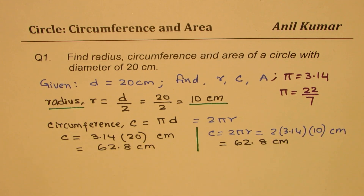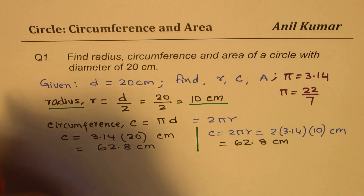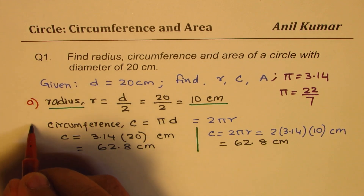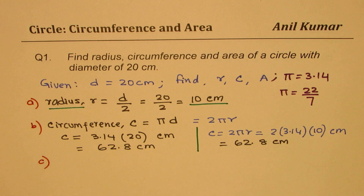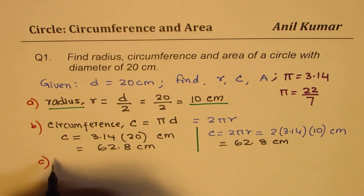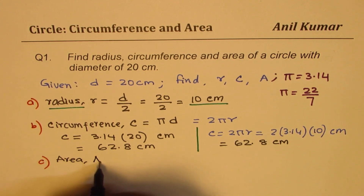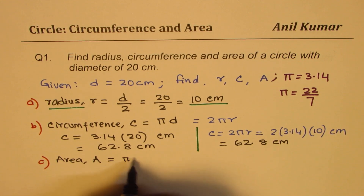So, when talking about circumference, you could use any of the two formulas — either πd or 2πr. We found the radius and the circumference. Now, let's look into the area. Area A of a circle equals π times r squared.